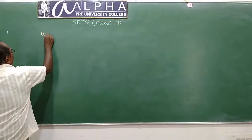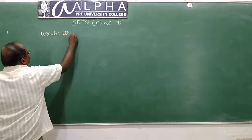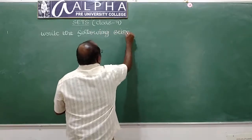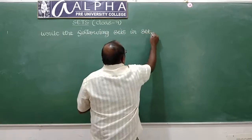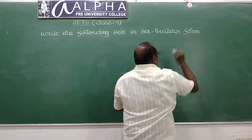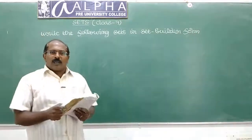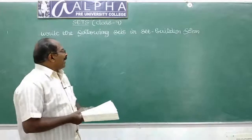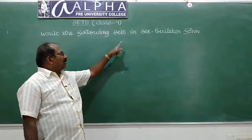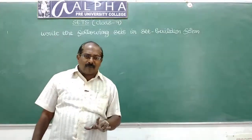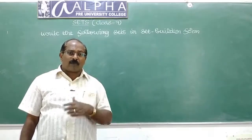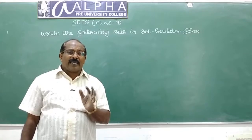Now we have a new type of question: write the following sets in set-builder form. In the previous types we listed elements. Now sets are given in roster form and we have to write them in set-builder form. In set-builder form, we don't list all the elements — all elements of the set possess a single common property which is not satisfied by any element outside the set.